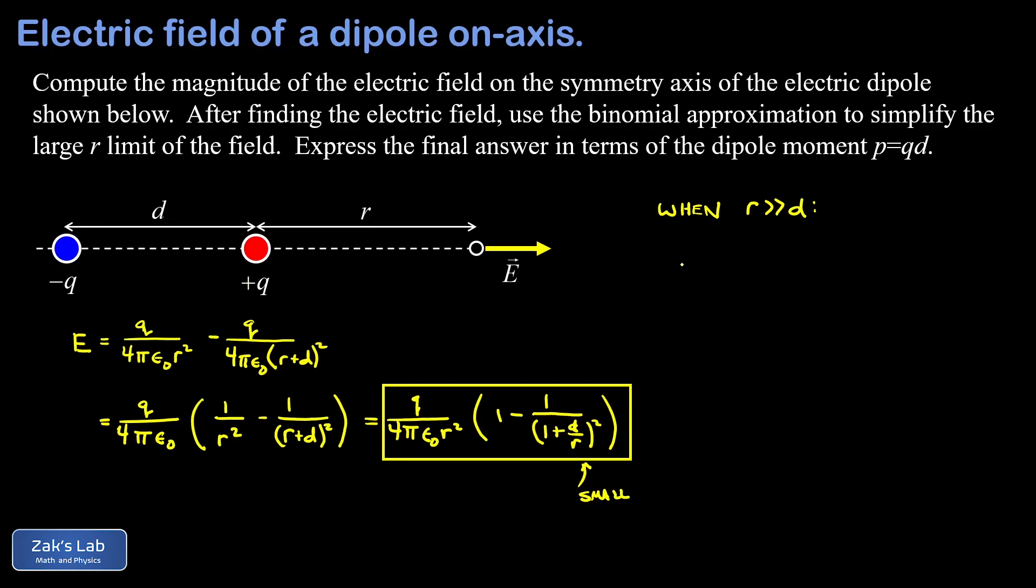So just as a quick reminder, if x is small and I have one plus x to the n, that's going to be approximately equal to one plus nx. And this comes from truncating a Taylor series. The next term would be quadratic, it would have an x squared in it, but if x is very small, that's negligible. So that's why we're able to truncate this.